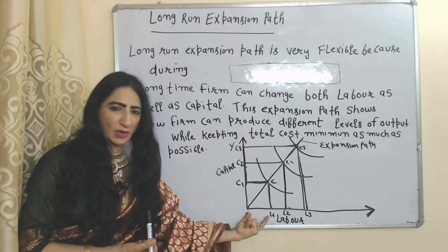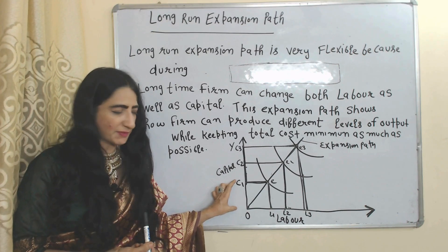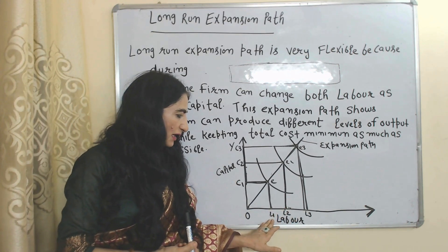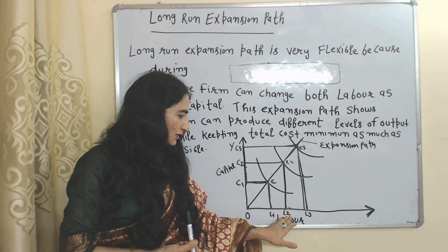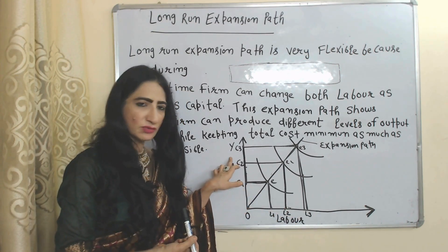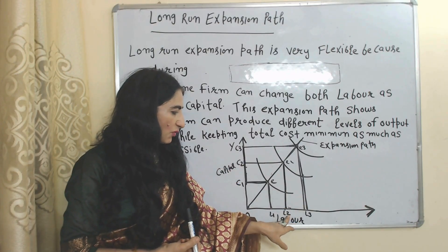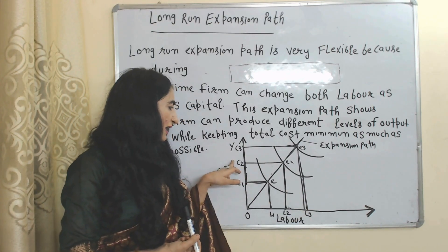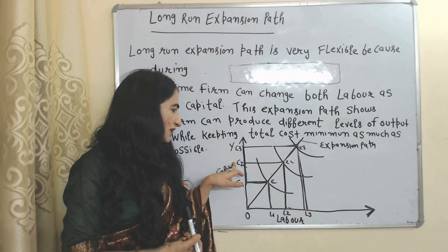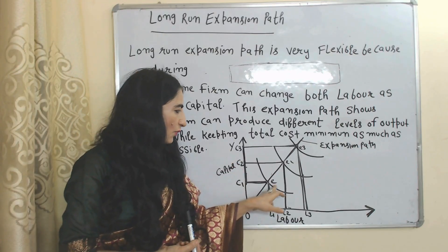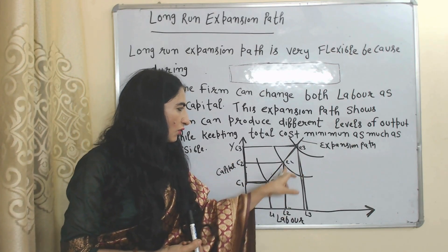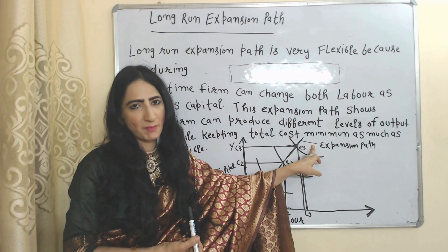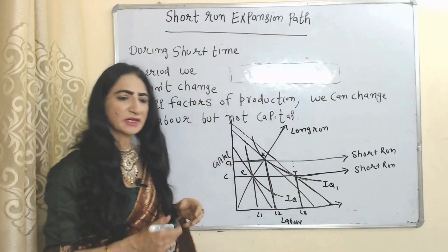Here you can see we are changing both factors — labor as well as capital. Initially we have OL1 labor and C1 capital. Then we change both: labor from L1 to L2 and capital from C1 to C2. Again we change labor from L2 to L3 and capital from C2 to C3. The line connecting all these producer equilibrium points is called the expansion path.